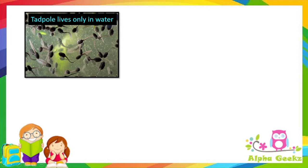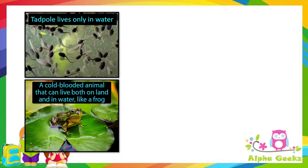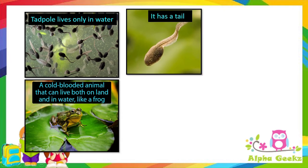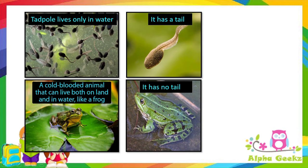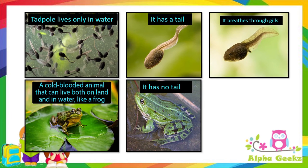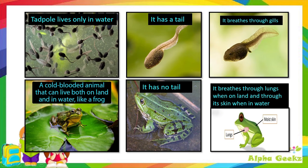Now let's look at the difference between a tadpole and an adult frog. A tadpole lives only in water, while a frog, which is a cold-blooded animal, can live both on land and in water. Tadpoles have a tail; frogs do not. Tadpoles breathe through gills because they live in water, while frogs breathe through lungs when on land and through their skin when in water.